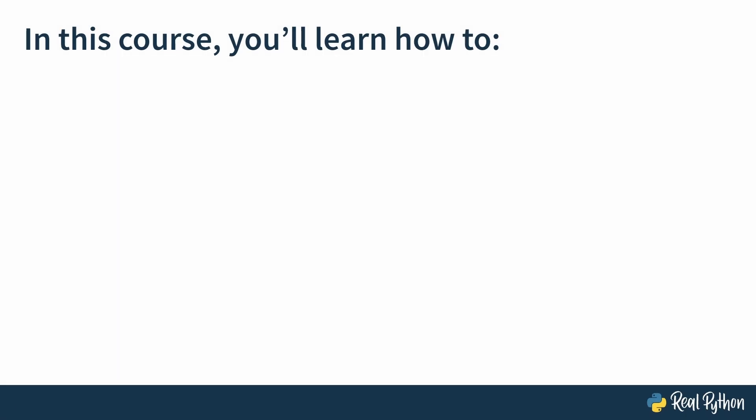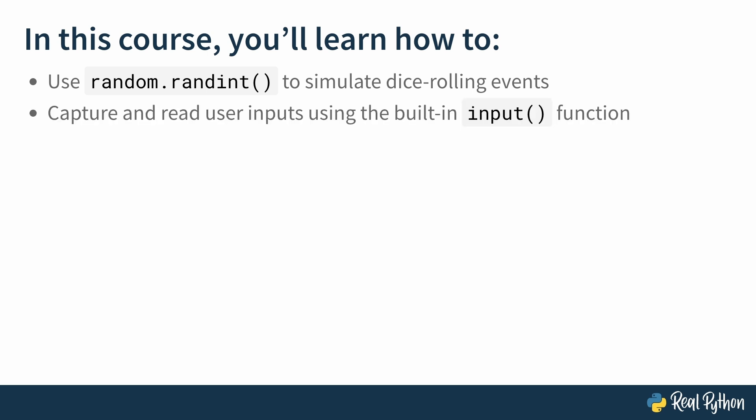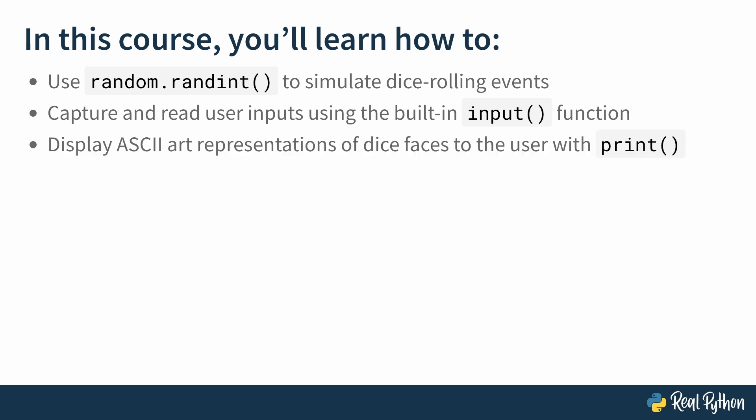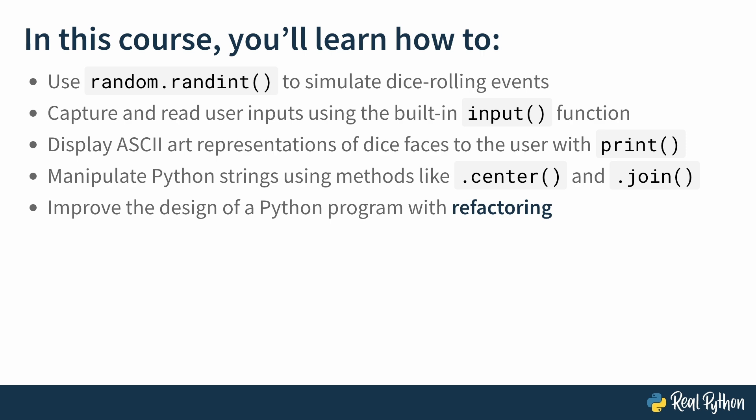Throughout this course, you'll learn how to use random.randint to simulate dice rolling events, how to capture and read user inputs using the built-in input function, how to display ASCII art representations of dice faces to the user with print, how to manipulate Python strings using methods like center and join, and finally how to improve the design of a Python program using refactoring.